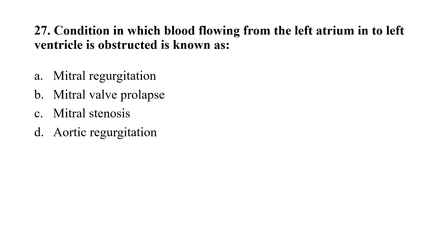Question number 27: A condition in which blood flow from the left atrium to the left ventricle is obstructed is known as — option A: mitral regurgitation; option B: mitral valve prolapse; option C: mitral stenosis; option D: aortic regurgitation. The correct option is C, that is mitral stenosis.